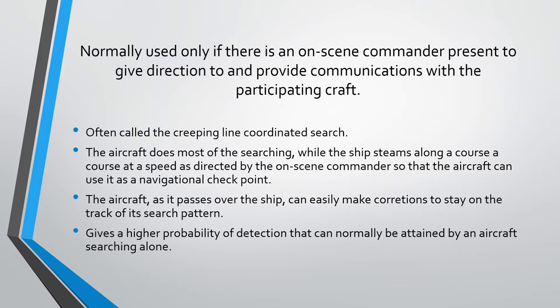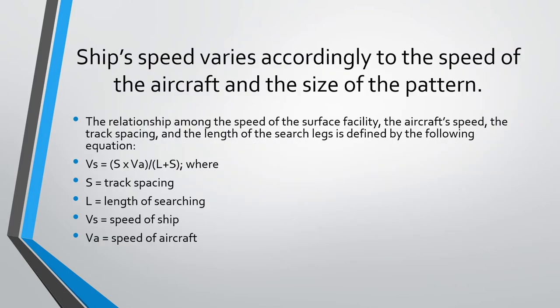The aircraft does most of the searching while the ship steams along a course at a speed directed by the on-scene commander, so that the aircraft can use it as a navigational checkpoint. As the aircraft passes over the ship, it can easily make corrections to stay on track. This type of pattern gives a higher probability of detection than can normally be attained by an aircraft searching alone. The ship speed varies according to the speed of the aircraft and the size of the pattern.